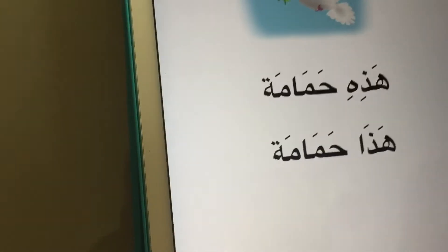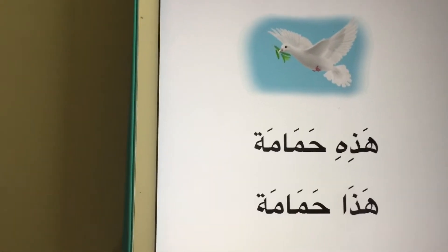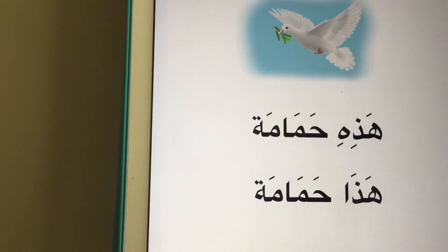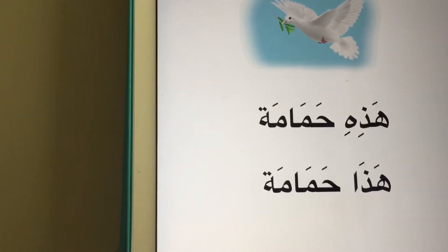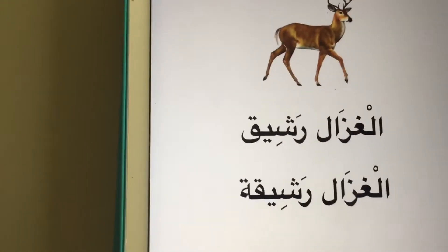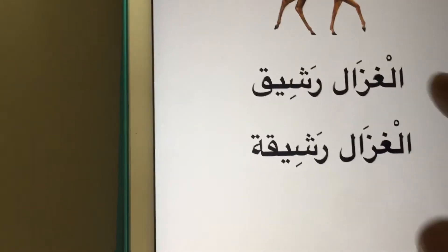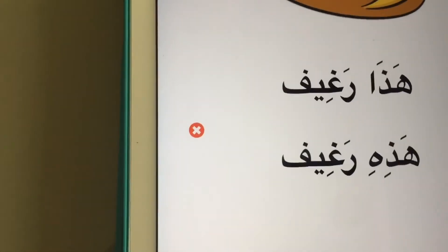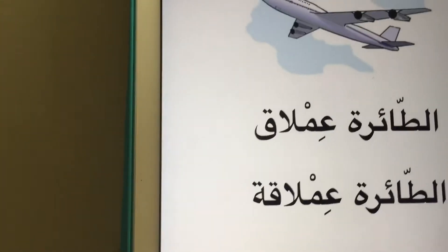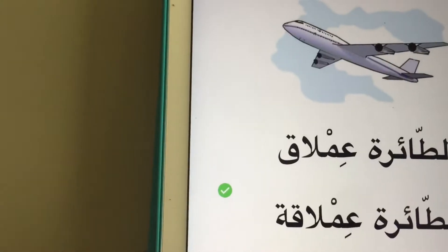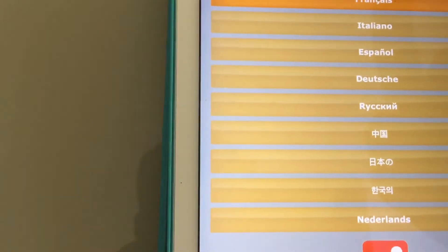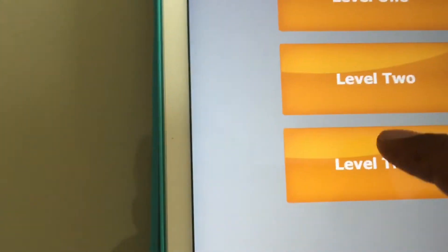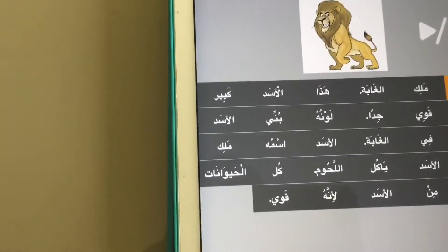In level two quizzes, we have a picture and two phrases — we need to choose the correct one. If we pick the wrong one, it will give a different sound.